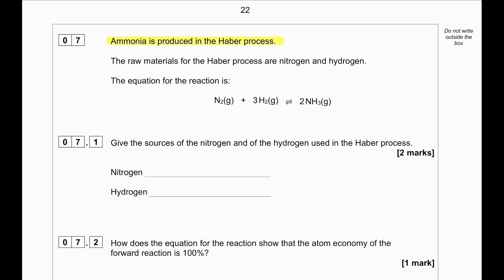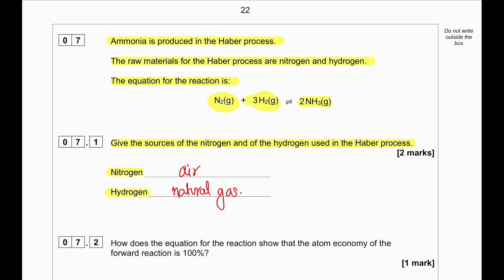Ammonia is produced in the Haber process. The raw materials for the Haber process are nitrogen and hydrogen. The equation is: nitrogen gas reacts with hydrogen in a reversible reaction to produce ammonia. Nitrogen is extracted from air, and hydrogen is extracted from natural gas.